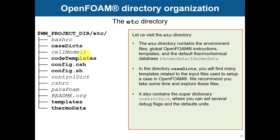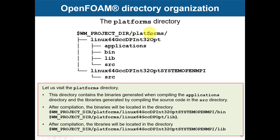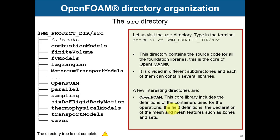OpenFOAM is all about reusing files that already exist and then adapting them. Then we move to the platform directory — this is created after you compile OpenFOAM, and here you have the executables and libraries just after compilation. The name you get here will depend on the compiler and extra options used. Then in src — this is the core of OpenFOAM, where you have all the source code for everything.